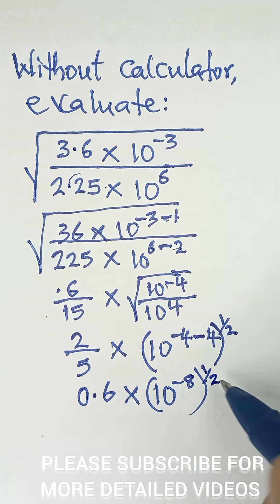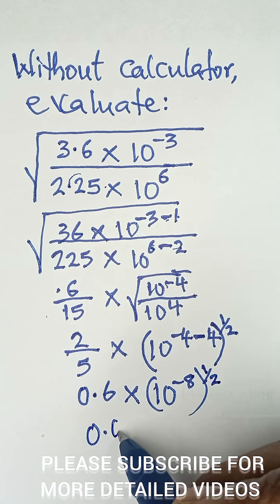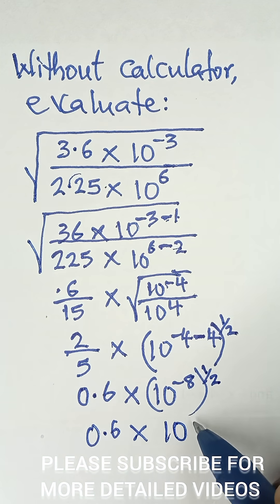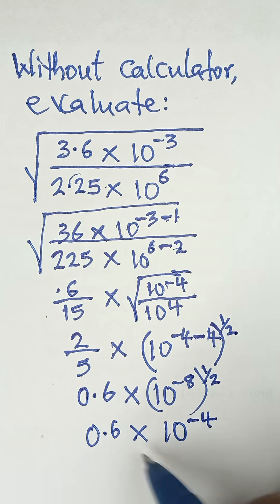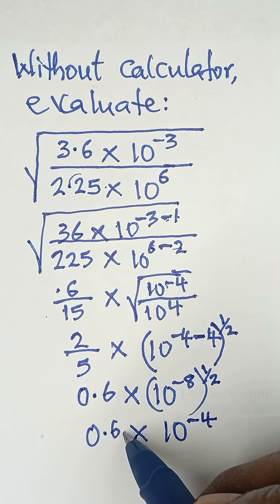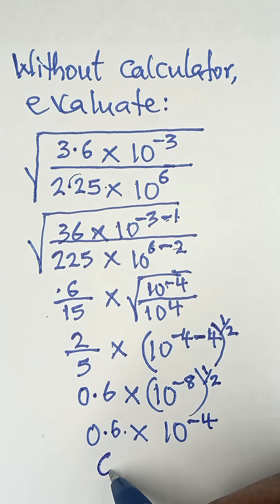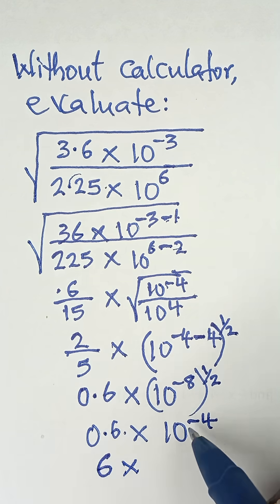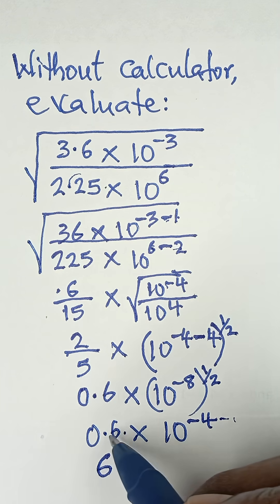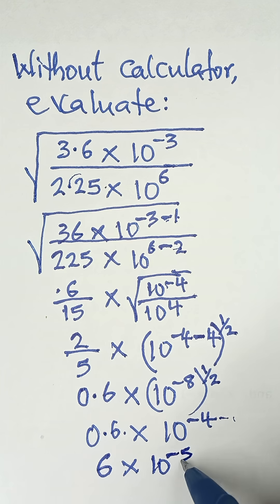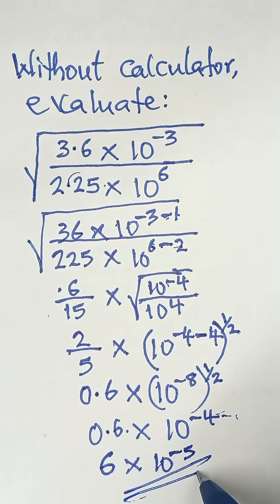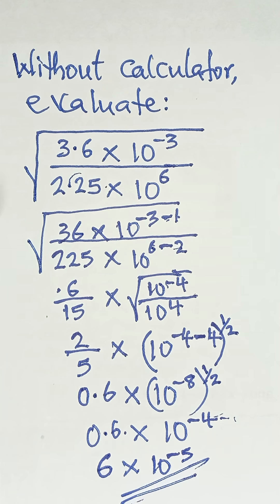This becomes 0.6 multiplied by 10 raised to the power of negative 4, since negative 8 multiplied by one half gives us negative 4. Now we move the decimal point once, giving us 6 multiplied by 10, and we subtract 1 from the power, so it becomes 10 raised to the power of minus 5. This is the final answer.